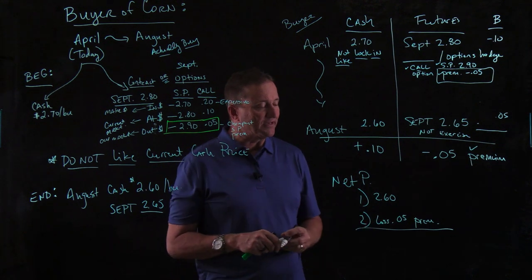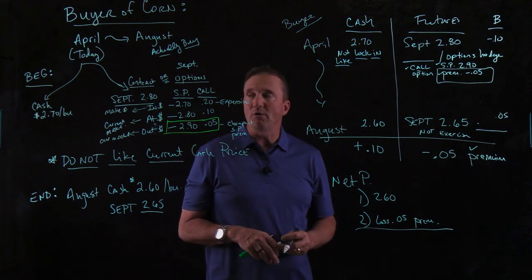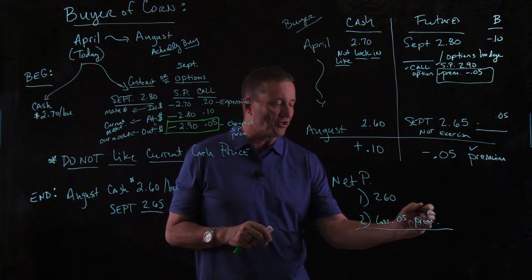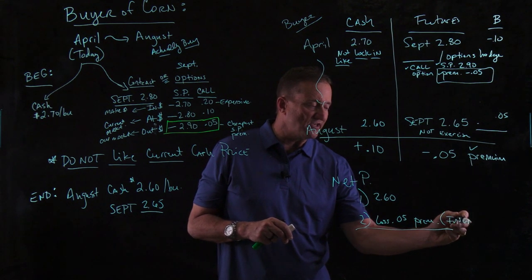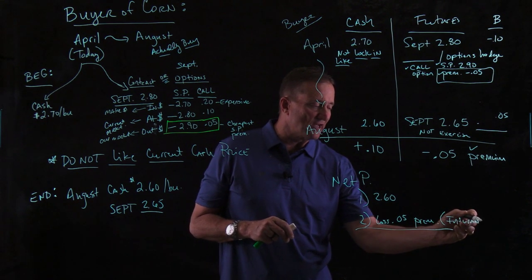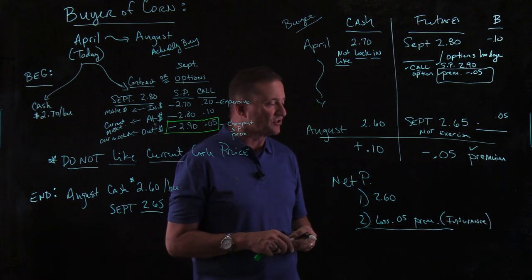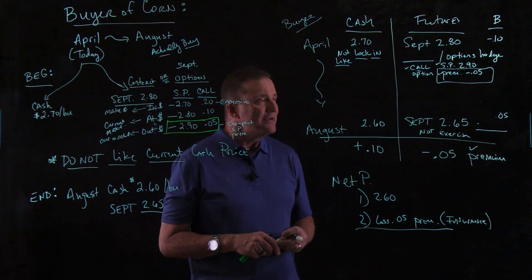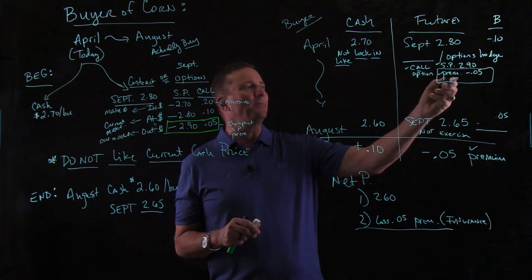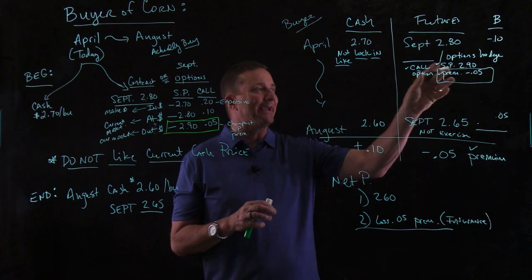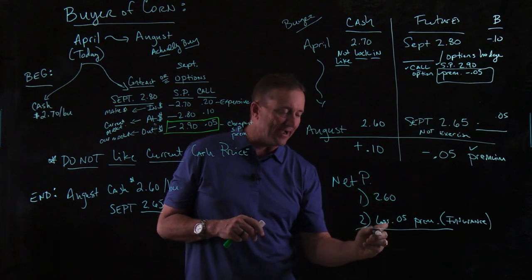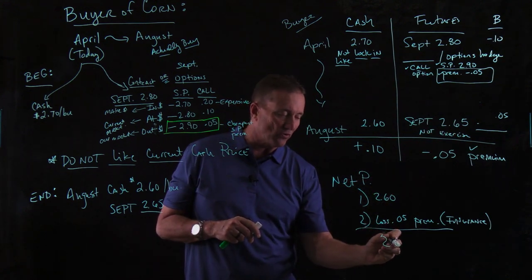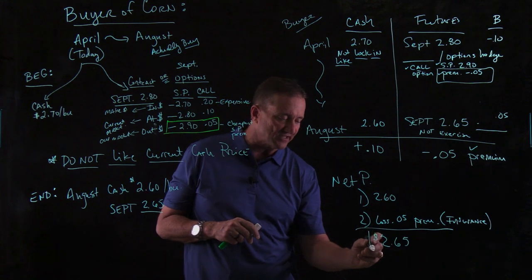So actually, when it comes down to what we had to pay, this insurance — you may think of an options hedge as much like insurance. In fact, all hedges are insurance, but an options hedge is very much like it. We paid a premium in case we needed it. Turned out we didn't need it. So what did you end up paying for your corn? You ended up paying $2.65.